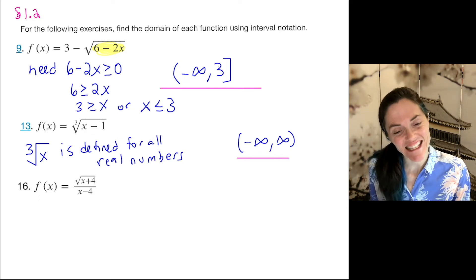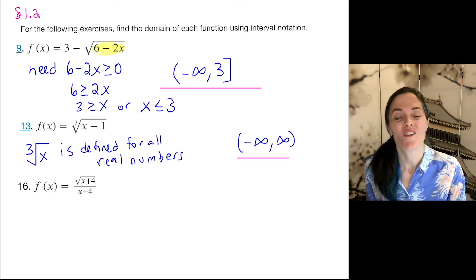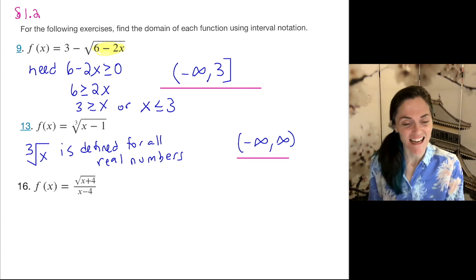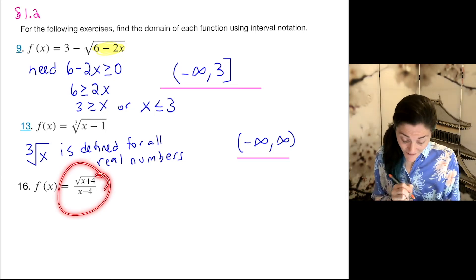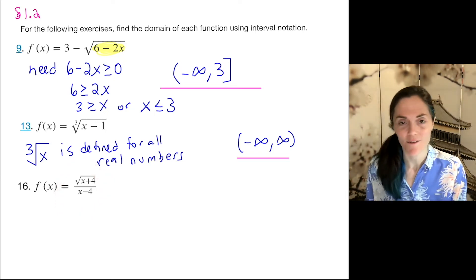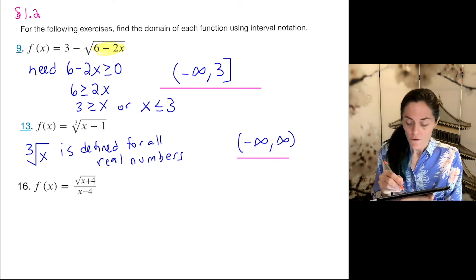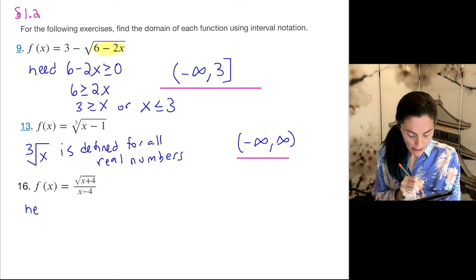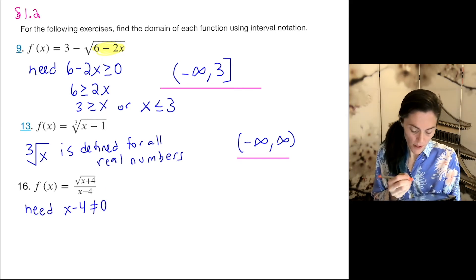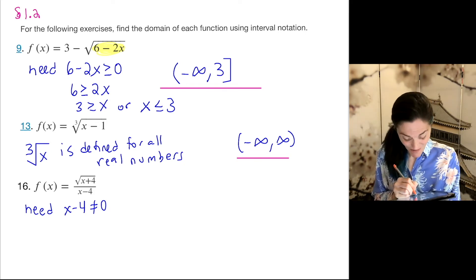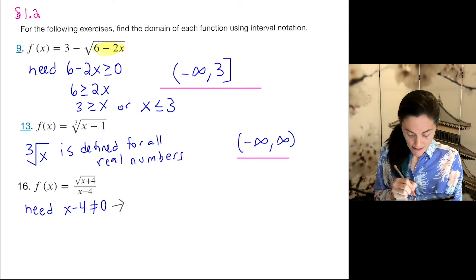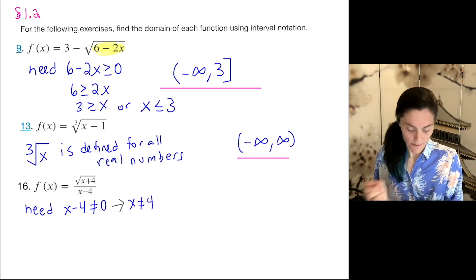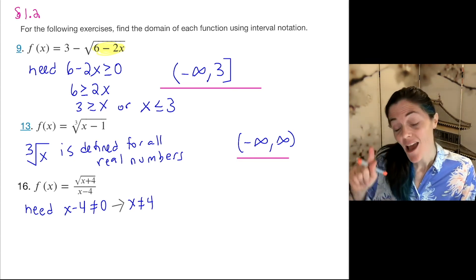Now, the final one, number 16, we have two things going on. This is going to be exciting. We have to treat the two different things and make sure the entire function is defined wherever I write down. So the first thing to think about is the denominator. We need x minus 4 not equal to 0. And we can just add 4 to both sides. This would say we need x is not equal to 4, and then we don't have to worry about dividing by 0.